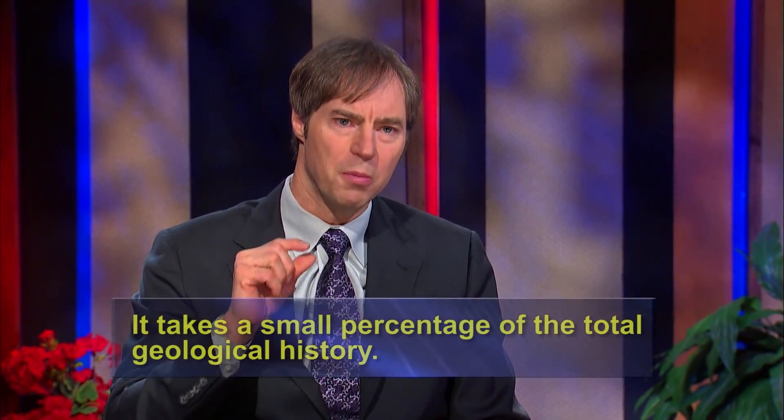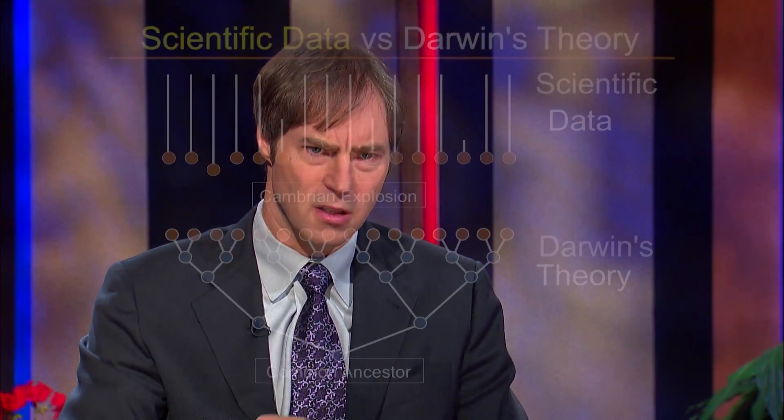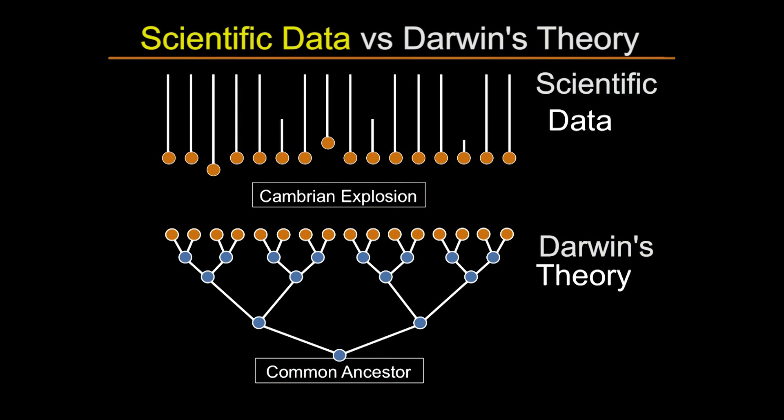The abrupt appearance of animal life in the Cambrian period is really surprising for a couple of reasons. First, it takes such a small percentage of the total of geological history. There's so much innovation that takes place in such a small fraction of time, which is really unexpected. You'd expect on a Darwinian basis that the mechanism of natural selection and random mutation would gradually produce little incremental changes, with a steady increase in complexity over time. But instead, we see a very discontinuous or discrete increase, and that increase is confined to a very small percentage of geologic time.